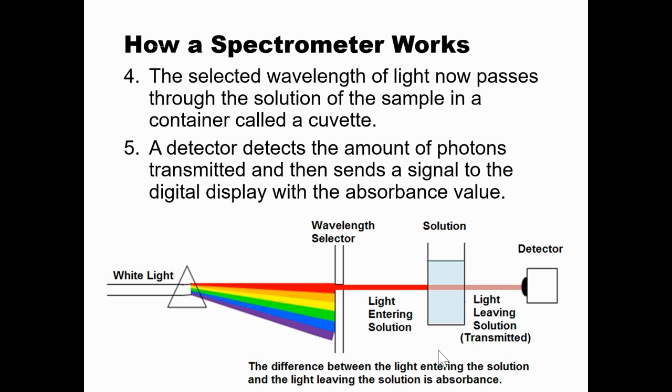Then there's a detector that detects the amount of photons transmitted and sends a signal to the digital display with the absorbance values. Basically, that detector is just a little solar panel, and it records how much light came through by how much electricity it's regenerating. And that is how a spectrometer works.